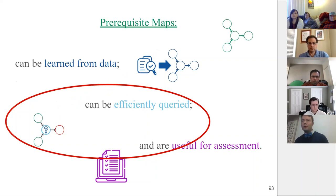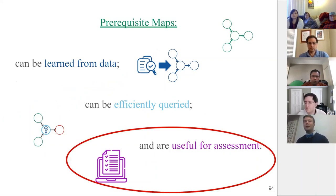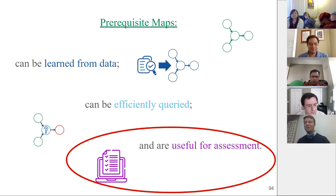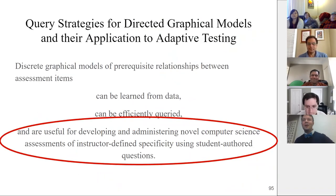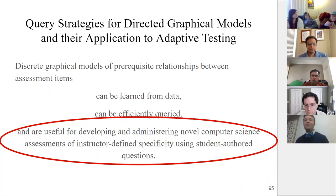TOPIC is able to recognize when questions are unrelated and can continue querying and gathering more information, whereas IRT levels off quickly. Prerequisite maps can be learned from data and efficiently queried — but are they useful for assessment? The actual thesis claim was more specific: that they're useful for developing and administering novel CS assessments of instructor-defined specificity using student-authored questions.